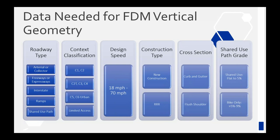For vertical geometry, we need some of the same information but also a little bit more. Roadway type has a bit more detail because there are differences between freeways versus interstate and ramps. We also need to know the context classification — that's a big extra one. Some of the vertical criteria is dependent on that. We still need design speed, whether it's new construction or triple R, whether it's curb and gutter or flush shoulder, and for shared use paths you need to know the controlling grade.